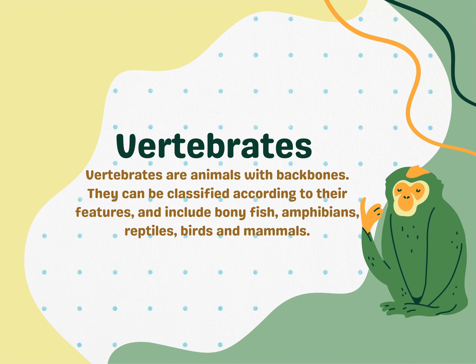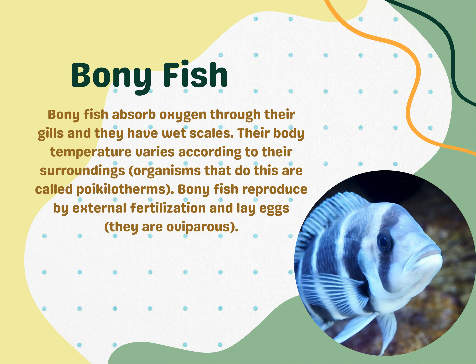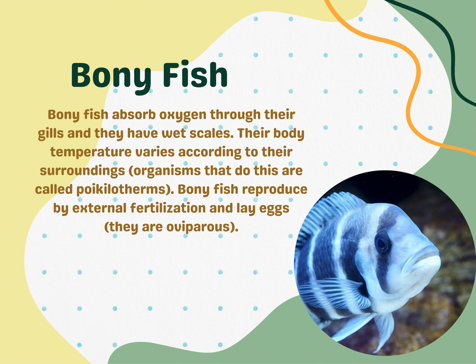Vertebrates are animals with backbones. They can be classified according to their features and include bony fish, amphibians, reptiles, birds, and mammals. Bony fish absorb oxygen through their gills and they have wet scales. Their body temperature varies according to their surroundings — organisms that do this are called poikilotherms. Bony fish reproduce by external fertilization and lay eggs; they are oviparous.